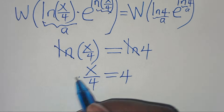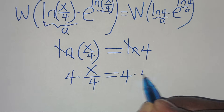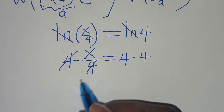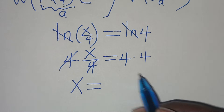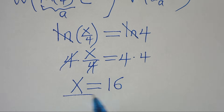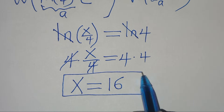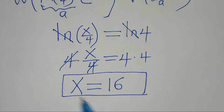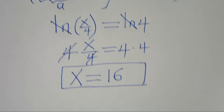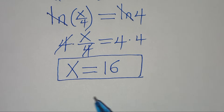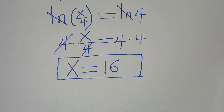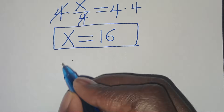Multiplying both sides by 4, the value of x is equal to 4 times 4, which is 16. The next step is to verify that this value of x satisfies the equation, so let's verify quickly.